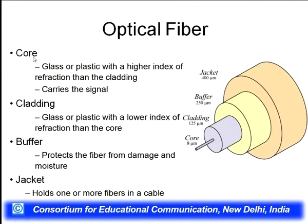The important features and requirements of the optical fiber include the core, cladding, buffer, and jacket. The core is the internal part of the optical fiber, approximately 8 micrometers in size, made of glass or plastic with a high index of refraction compared to the cladding. It carries the signal. The cladding is also made of glass or plastic but with a lower index of refraction, and its size is 125 micrometers.